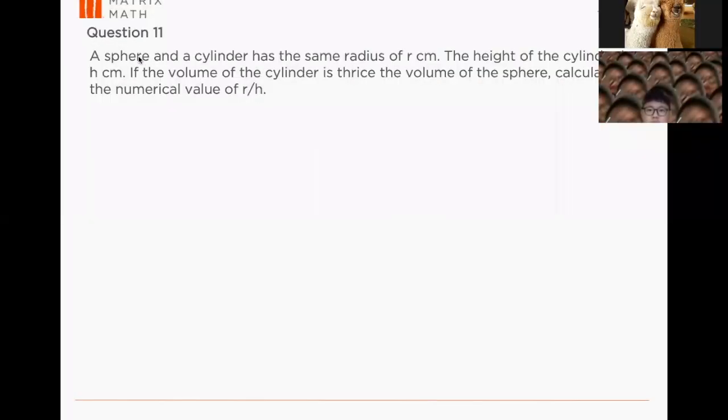Okay, so the question here is very simple. They say very short, not a lot of things given. A sphere and a cylinder has the same radius of r cm. The height of the cylinder is h, and if the volume of the cylinder is thrice the volume of the sphere, can you calculate the numerical value of r over h?